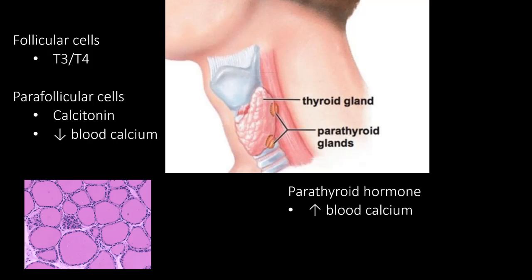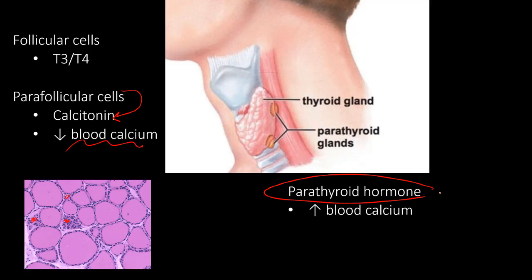Within the thyroid, the follicular cells of the thyroid gland form circles and release T3 and T4. Parafollicular cells, located in the adjacent areas, release calcitonin, which decreases blood calcium. In contrast, parathyroid hormone from parathyroid glands on the posterior side of the thyroid gland will increase blood calcium.